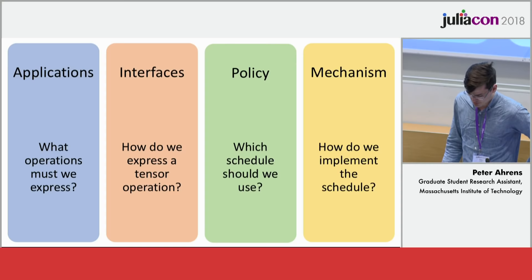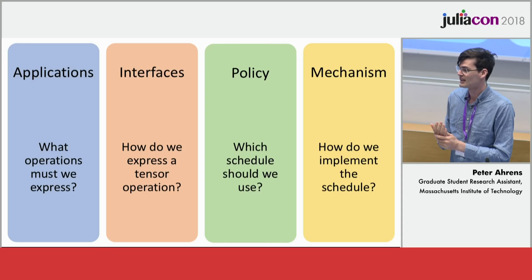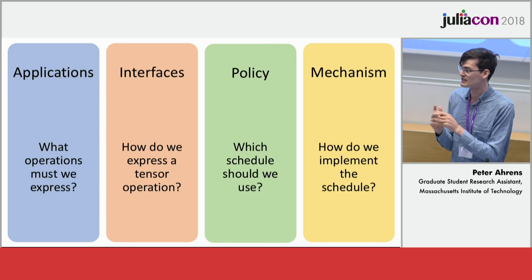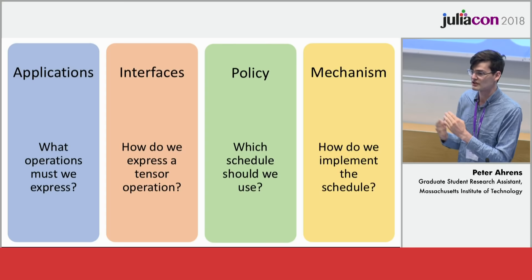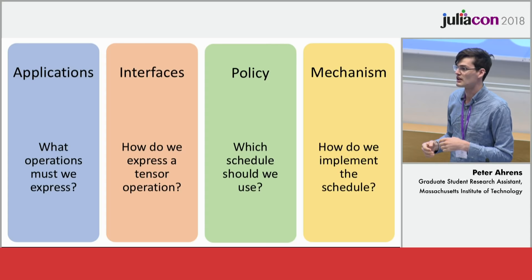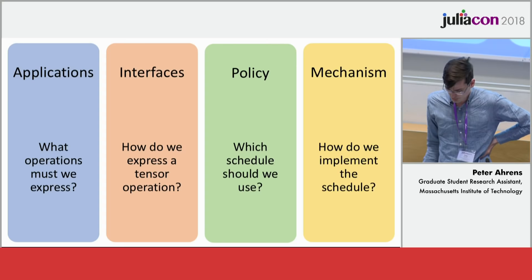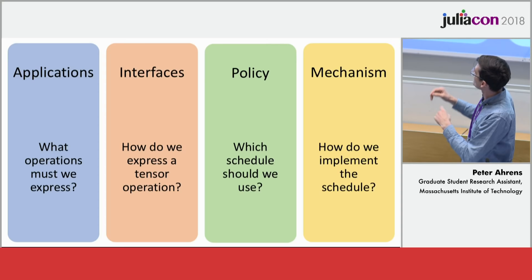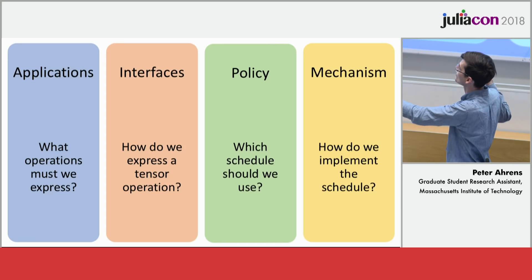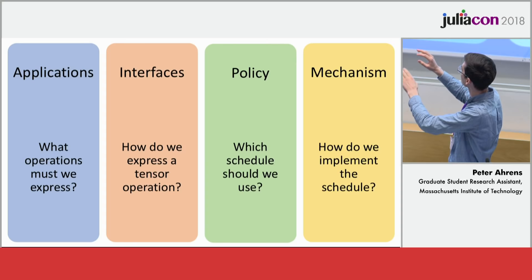An example schedule: we've all optimized C programs before. There are maybe five different techniques — you can unroll, vectorize, block, or parallelize a loop. So maybe the schedule is that I unroll loop five and vectorize the inner loop, and the mechanism is how we implement that. I think the answer to question two kind of changes how we think about the rest of this stack. If we can answer that one correctly, we can start filling in the rest.